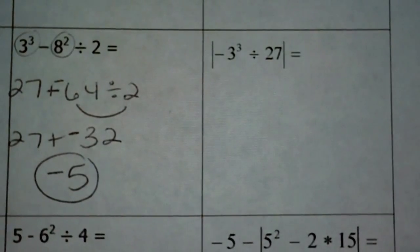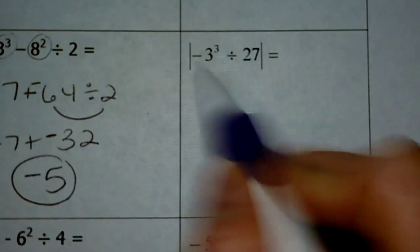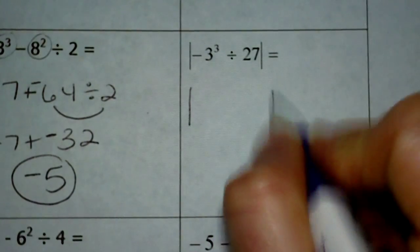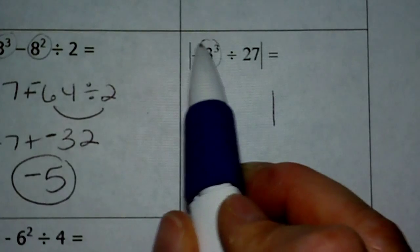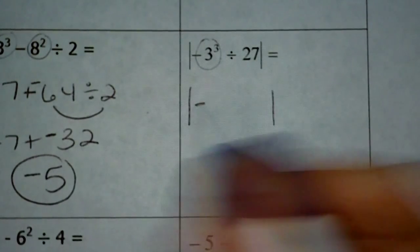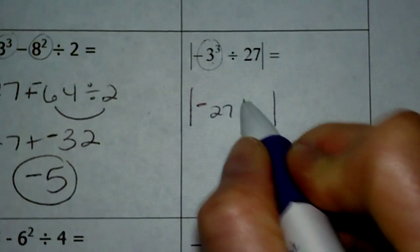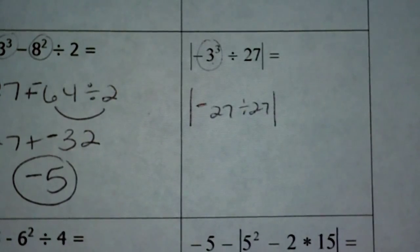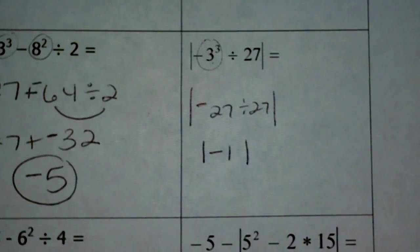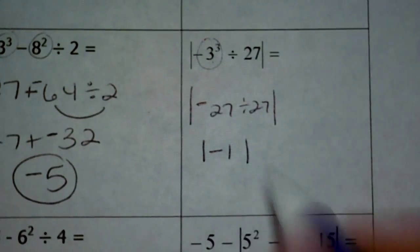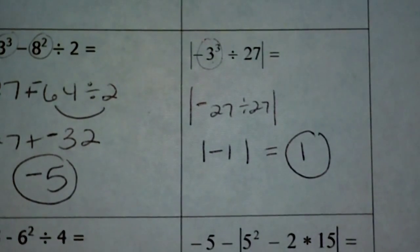Next example — it's been a while since you've seen these absolute value signs. This means take the absolute value of the result of what's inside. First we take care of the exponential expression inside. Remember, this is a negative base that is not in parentheses, so no matter what it's going to be negative. 3 to the third power: 3 times 3 is 9, and 9 times 3 is 27. Then I take negative 27 and divide it by positive 27 — any number divided by itself is 1, and negative divided by positive is negative 1. The absolute value of negative 1 is 1, so your final answer is 1.